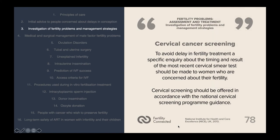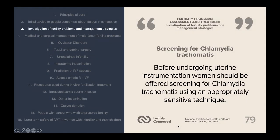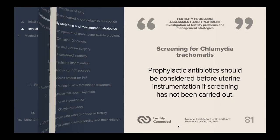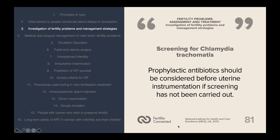Further testing includes cervical cancer screening. To avoid delay in fertility treatment, a specific inquiry about the timing and result of the most recent cervical smear test should be made to women who are concerned about their fertility. Cervical screening should be offered in accordance with the National Cervical Screening Programme guidance. Screening for chlamydia trachomatis should be done before undergoing uterine instrumentation using an appropriately sensitive technique. If the result is positive, women and their sexual partners should be referred for appropriate management. Prophylactic antibiotics should be considered before uterine instrumentation if chlamydia screening has not been carried out.